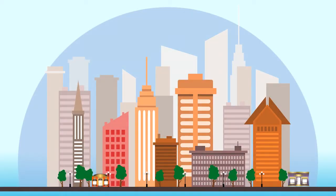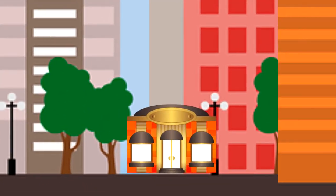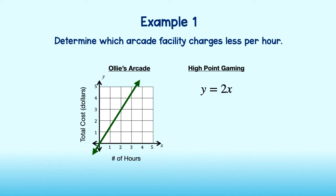Let's look at an example. Harley wants to go to the arcade with his friends after school. They are having trouble deciding between Ollie's Arcade and High Point Gaming. Harley suggests they go to the arcade that costs less. Here, you see a graph that represents the cost for Ollie's Arcade and an equation that represents the cost of High Point Gaming. How can we determine the cheaper arcade?